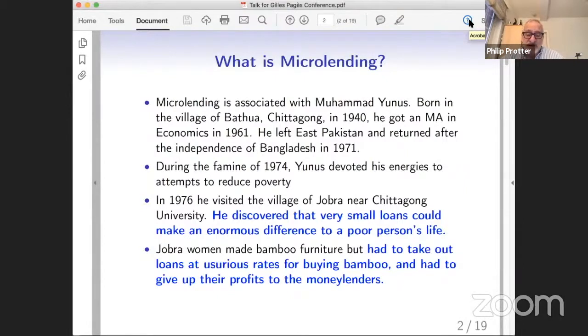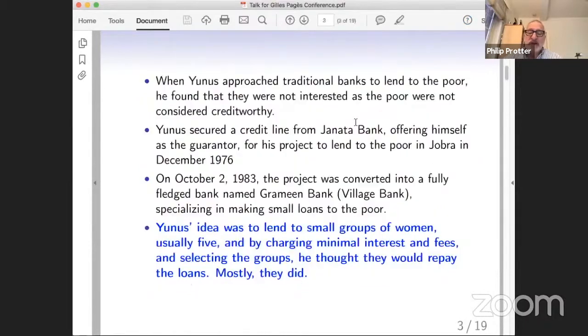In particular, for women, he noticed that the women made bamboo furniture. But to do that, they had to buy the bamboo, and to buy the bamboo, they would take out loans at an extremely high rate of interest, because the women had no credit history. In Bangladesh at the time, women were completely excluded from all aspects of the economy that used money. That was reserved for their husbands. So they had absolutely no credit history, and that usually means they charge a lot of interest.